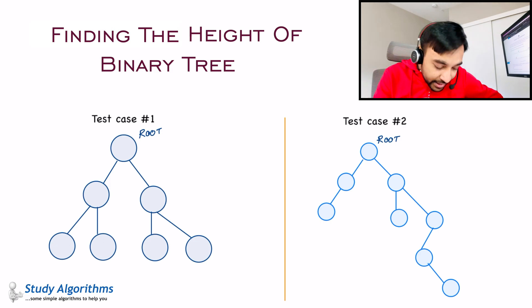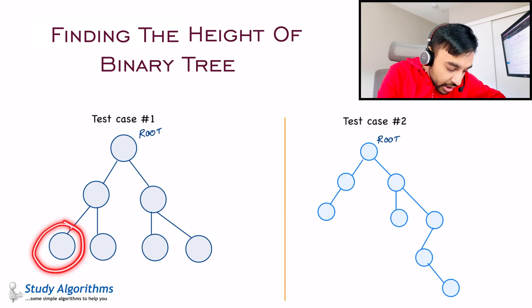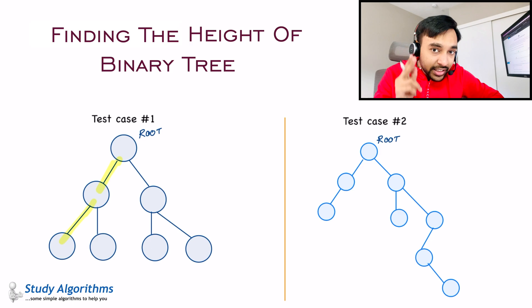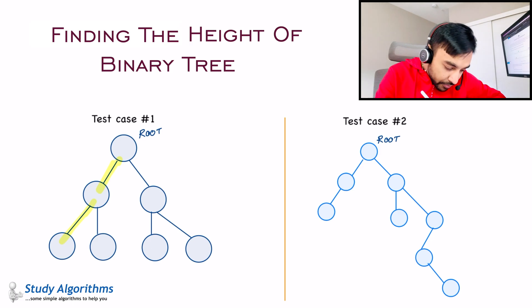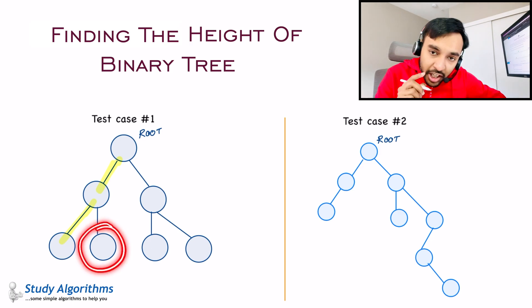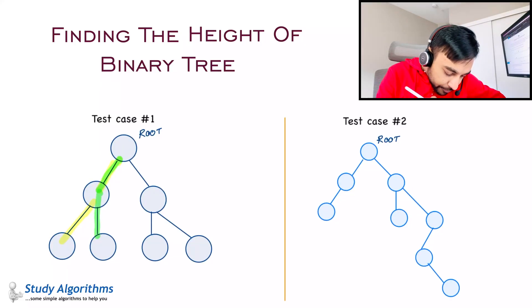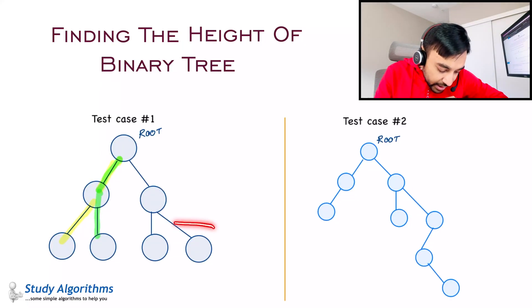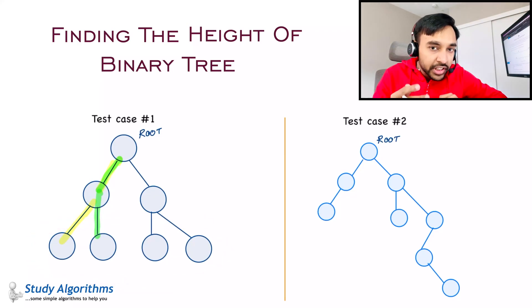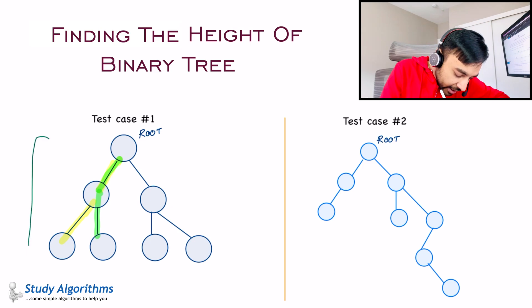The height of a binary tree would be the maximum distance of all of these four nodes from the root. For the first leaf node, the distance would be 1 and then 2, so this distance is 2. For node number 2, the distance is again 2. So in this particular scenario, the distance of all four nodes is 2, and we can safely say that the height of this binary tree is equal to 2.